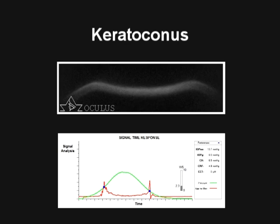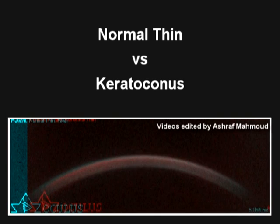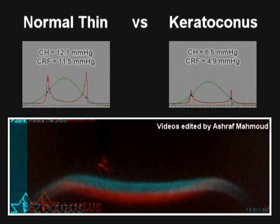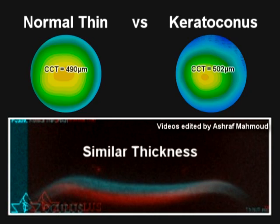Shown here is a cornea with keratoconus that has similar thickness to the previous normal cornea. If the two corneas are pseudo-colored and then superimposed and synchronized in time during the application of the air puff, one can appreciate the differences in the deformation characteristics. The red keratoconic cornea deforms almost a full corneal thickness more than the normal cornea with similar thickness and similar IOP.